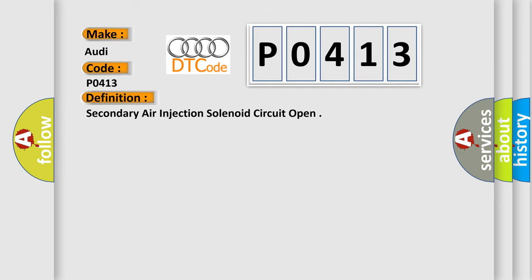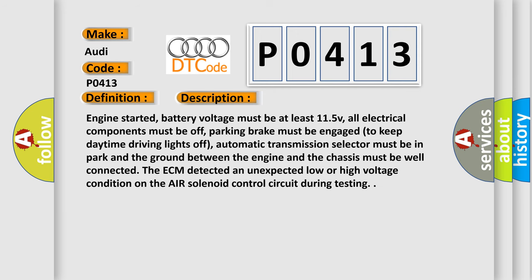Here is a short description of this DTC code. Engine started, battery voltage must be at least 11.5V, all electrical components must be off, parking brake must be engaged to keep daytime driving lights off, automatic transmission selector must be in park, and the ground between the engine and the chassis must be well connected. The ECM detected an unexpected low or high voltage condition on the air solenoid control circuit during testing.